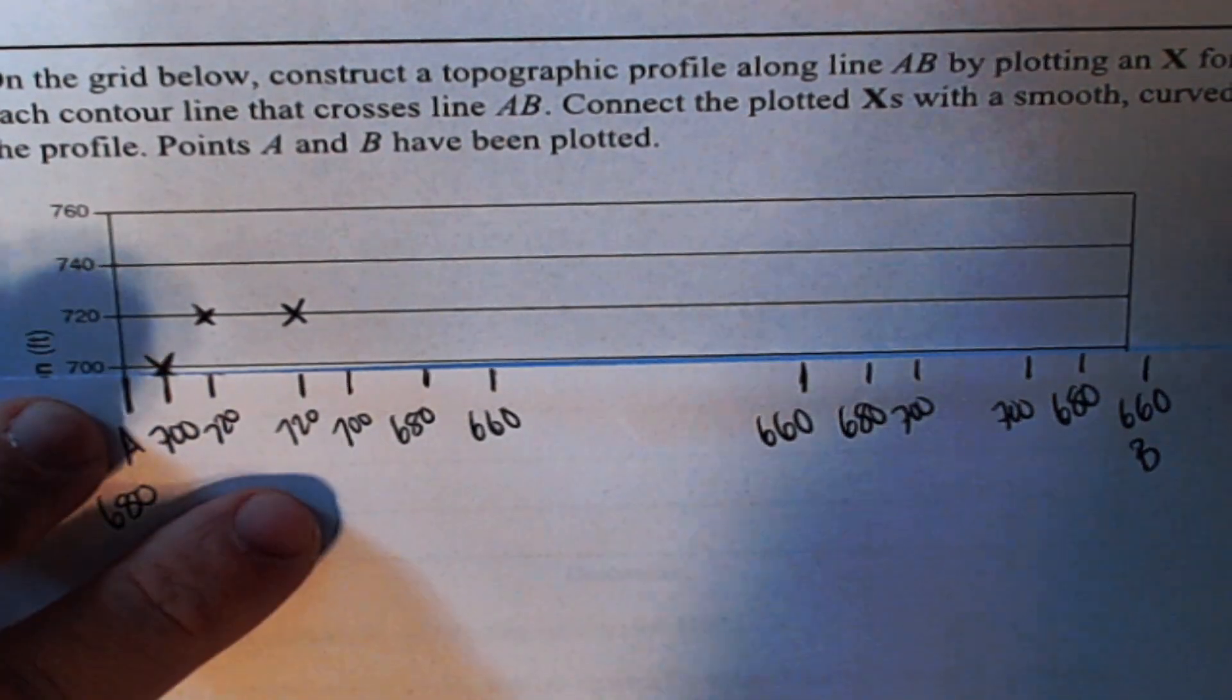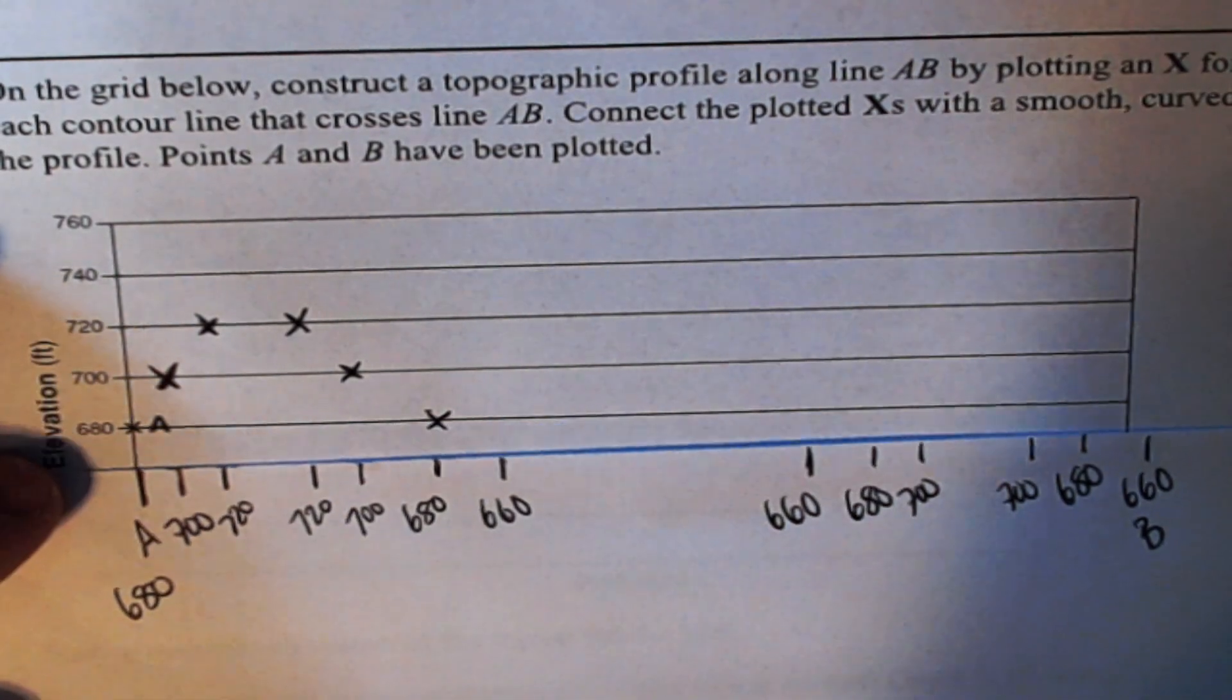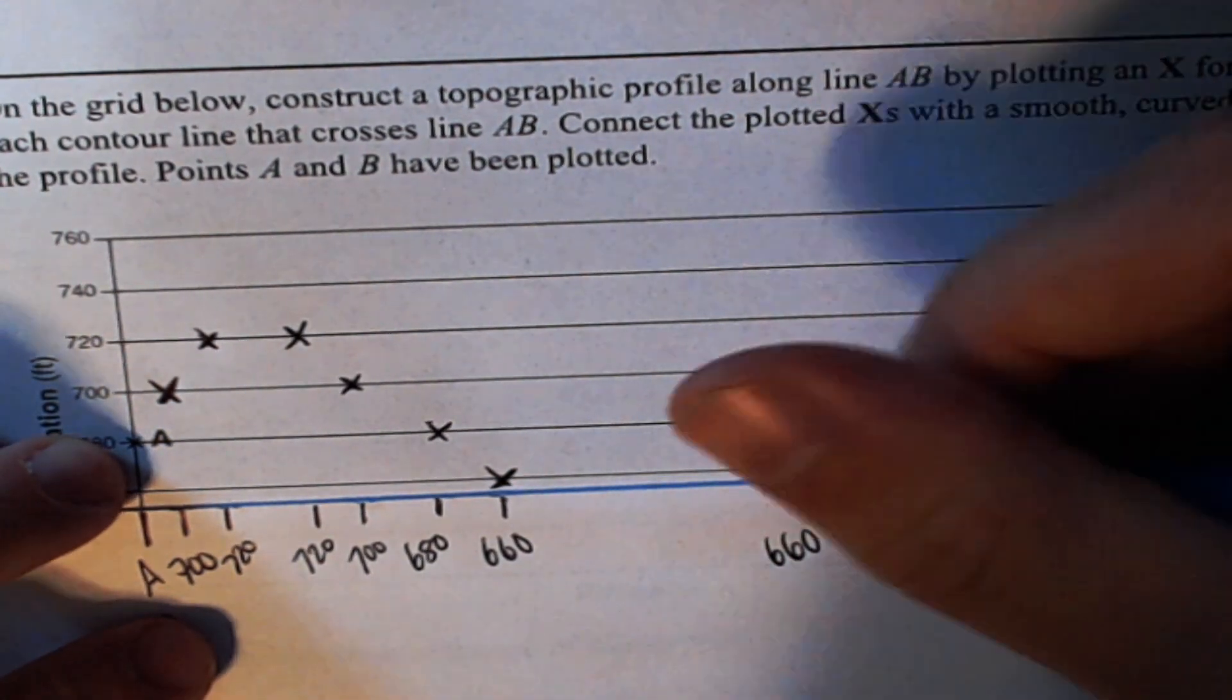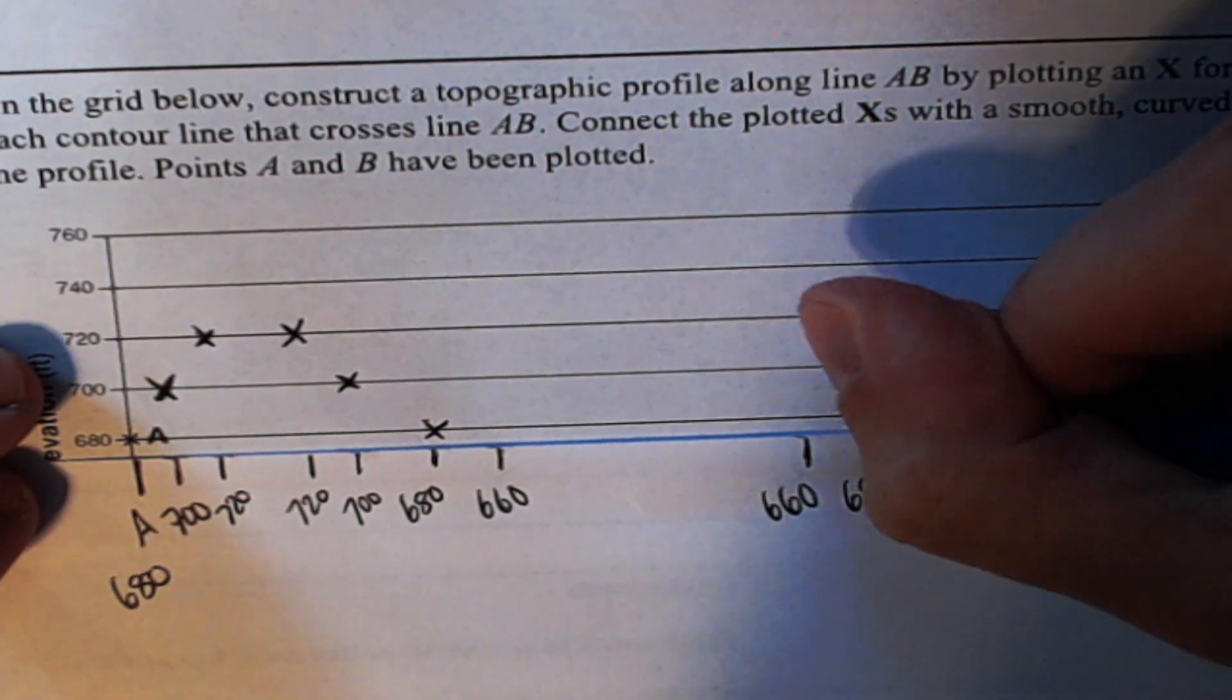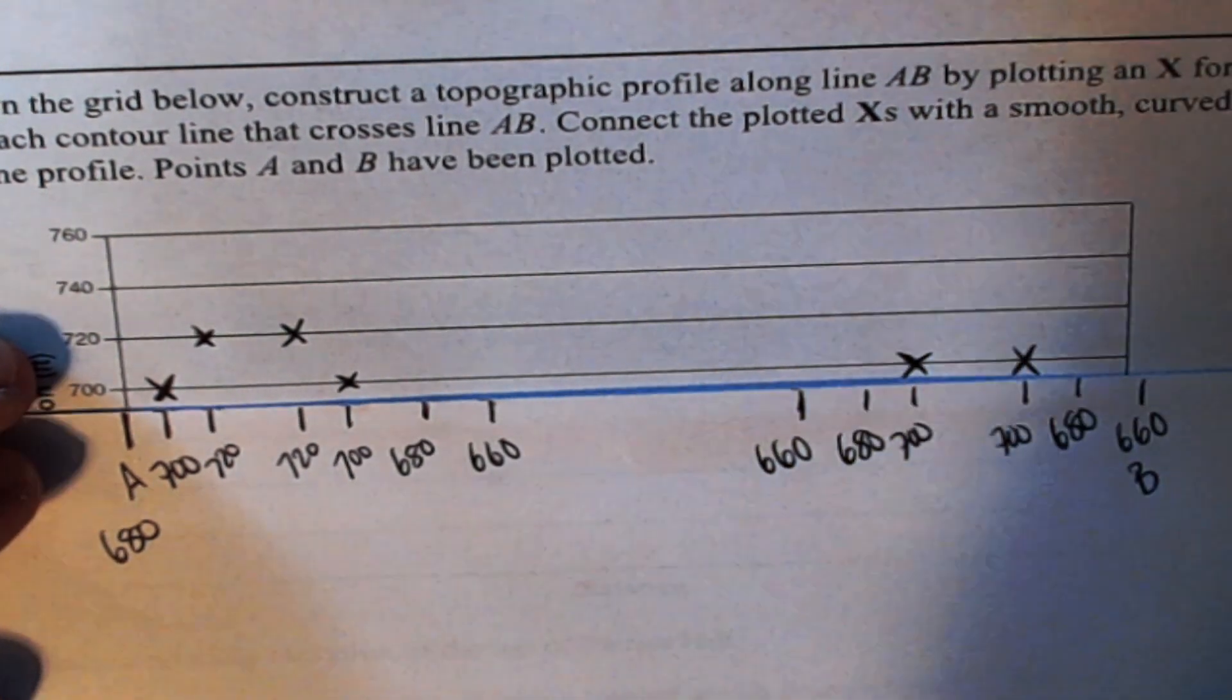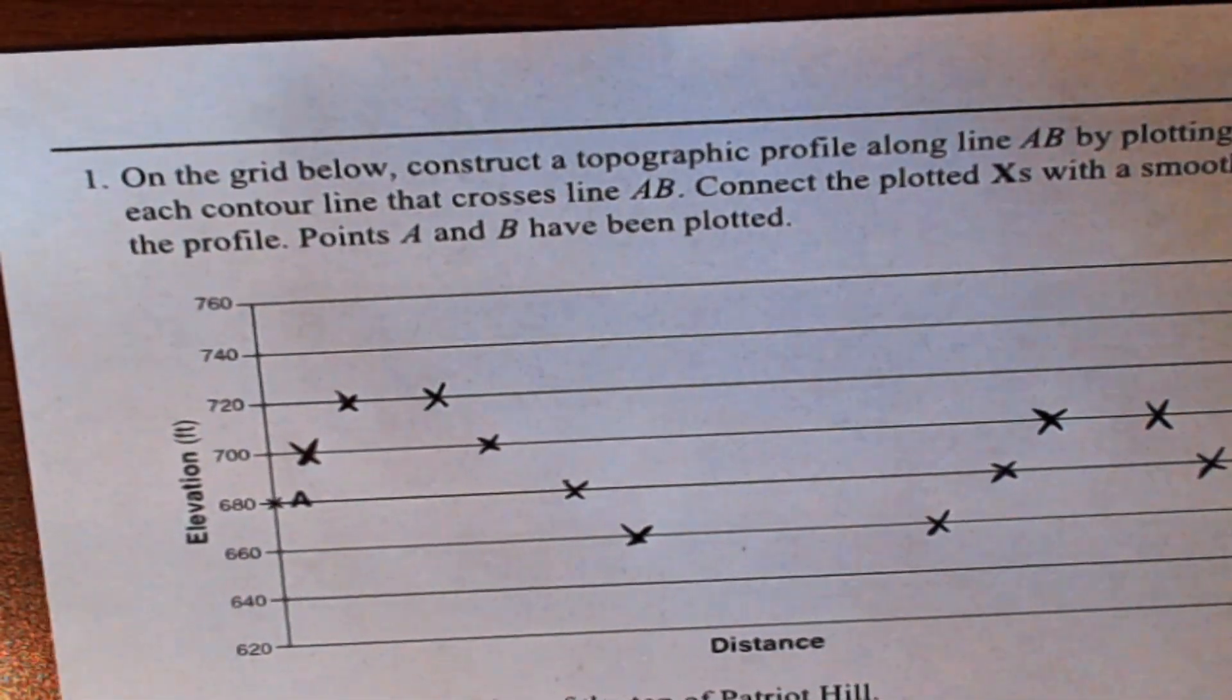Now we go back down to 700, now we go down to 680, now we go down to 660. Then we got another 660 right here, then we go back up to 680, then we go back up to 700, and there's another 700. Then we go down to 680 and my last line they plotted for us.